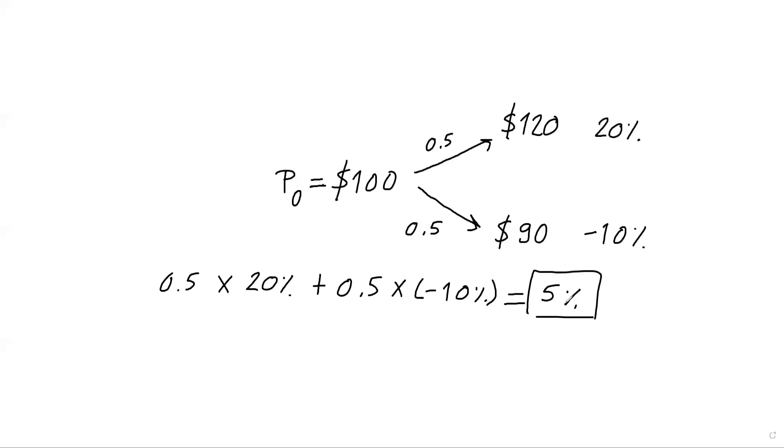Now, we can also write this formula in a more formal way, mathematical way. So the expected return for any asset—in this case, we are talking about stocks—will be a probability weighted outcome of the possible return observations. So we have to have probabilities of each state.